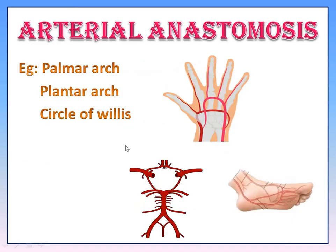Examples of Arterial Anastomosis include the Circle of Willis, Plantar Arch, and Palmar Arch. In the Palmar Arch, the Radial Artery and Ulnar Artery join together to form the Palmar Arch.